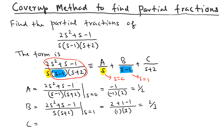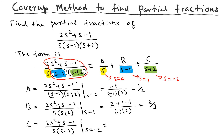For C, we remove the (s + 2) term from the denominator, leaving s(s − 1), and plug in s = −2. The numerator gives 2(−2)² + (−2) − 1 = 8 − 2 − 1 = 5, and the denominator gives (−2)(−3) = 6, so C = 5/6. That's the cover-up method — it quickly gives you the values of A, B, and C for different linear factors.